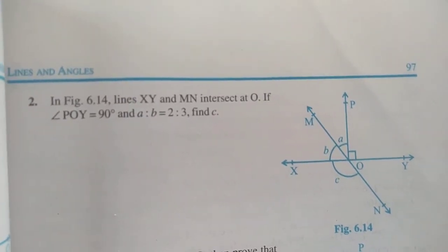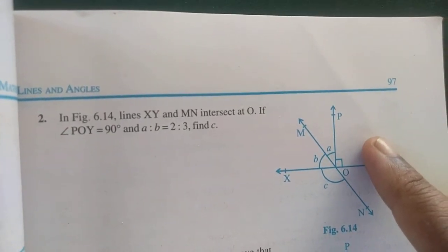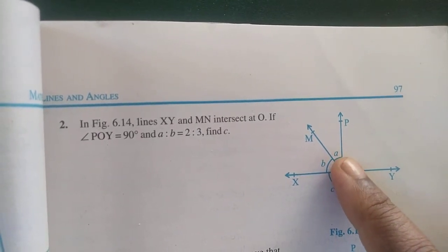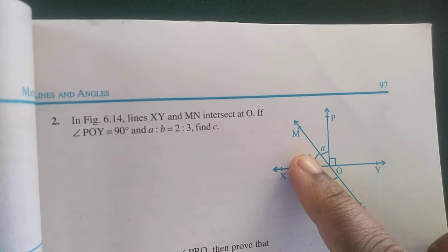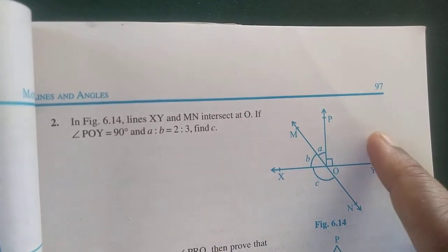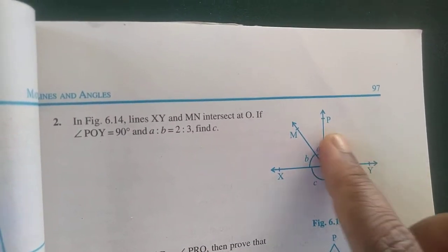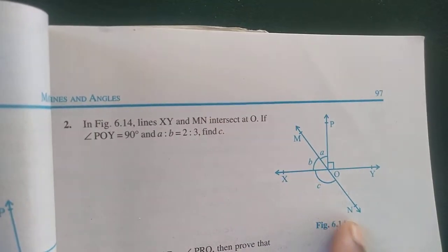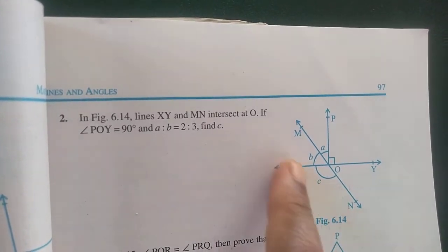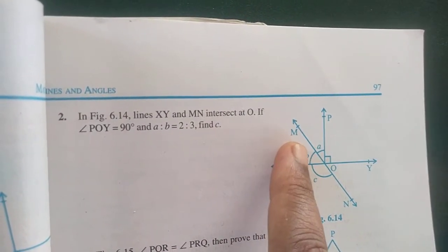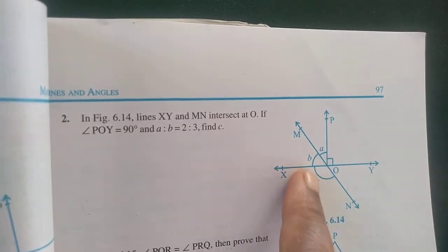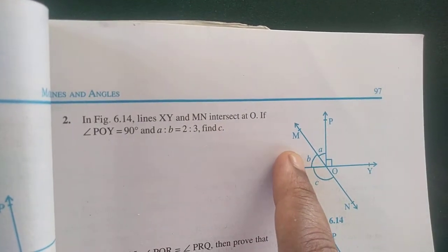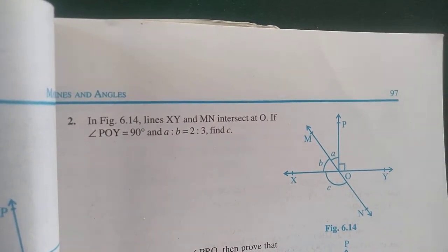For the second question, they have given one angle as 90 degrees and the ratio of A to B as 2 is to 3. So I can take these as 2x and 3x. The equation becomes 2x plus 3x plus 90 degrees equals 180 degrees. From here I will find the value of x, then find B. Since B and C are a linear pair, angle B plus angle C equals 180 degrees, so I will find angle C by subtracting angle B from 180 degrees.